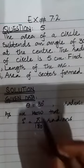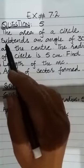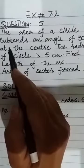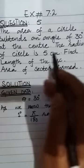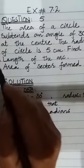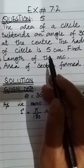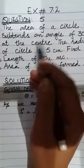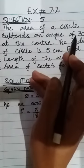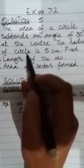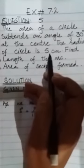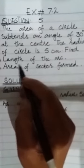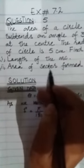Exercise 7.2, question number 5. In this question, the area of a circle subtends an angle of 30 degrees at the center. The radius of the circle is 5 centimeters. We have to find: the length of the arc, and the area of the sector.